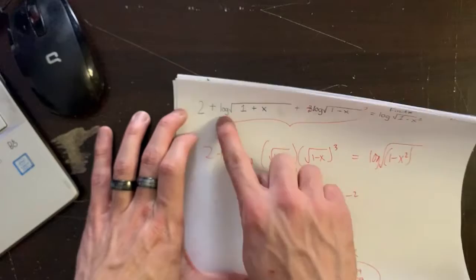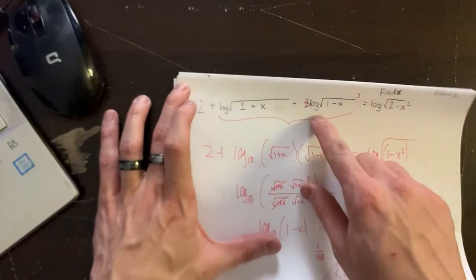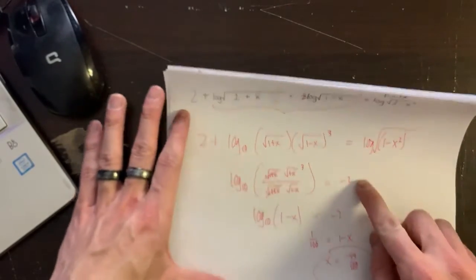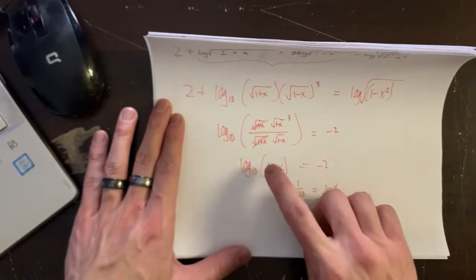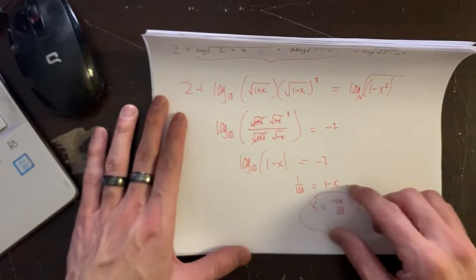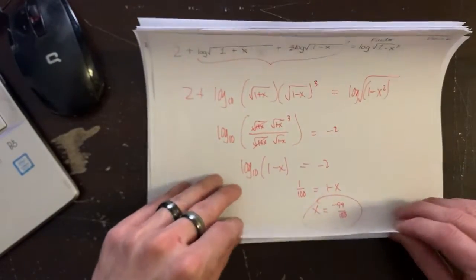So here we had an equation. I combined the two logs into one. I brought this over and combined it with them. I brought the two to this side. Ten to that power is that. Bring this over here. Add the x, subtract the fraction. You get this number right there.